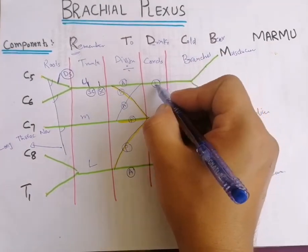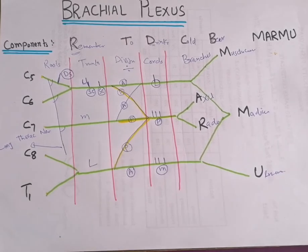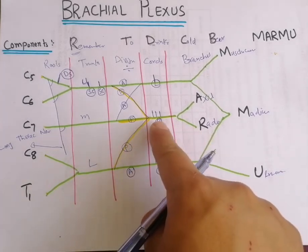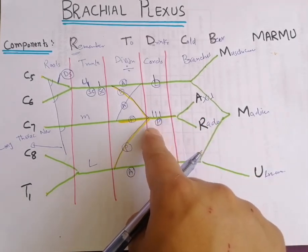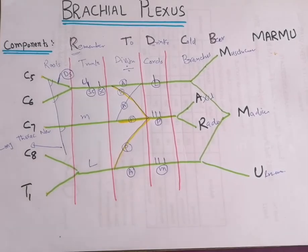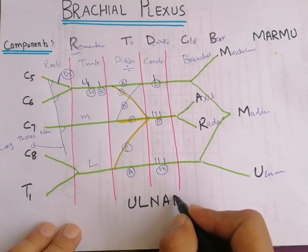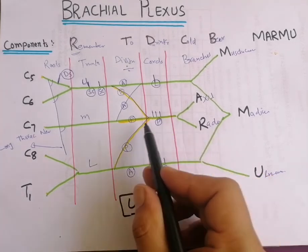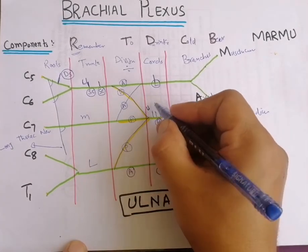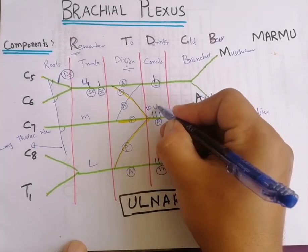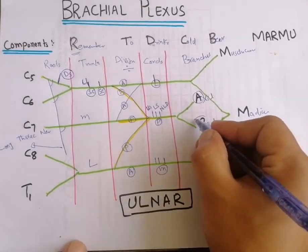The lateral cord gives a single terminal nerve, the posterior cord gives three collateral branches plus two terminal branches (five total), and the medial cord gives three branches. The branches of the posterior cord can be remembered with the mnemonic ULNAR: U = upper subscapular nerve, L = lower subscapular nerve, N = nerve to latissimus dorsi, A = axillary nerve, R = radial nerve.